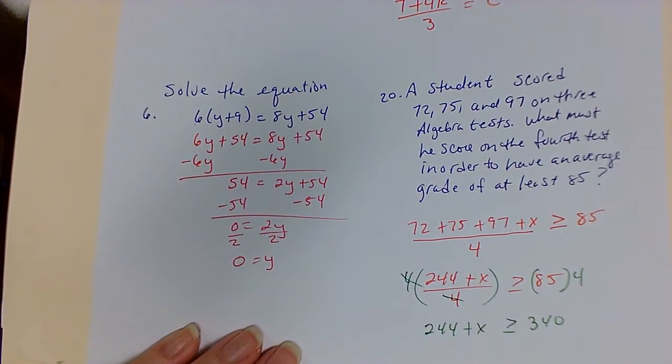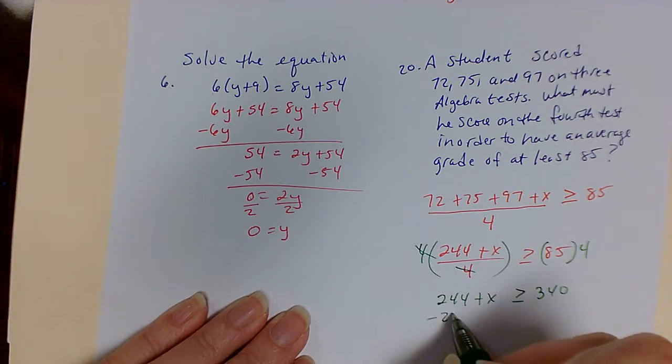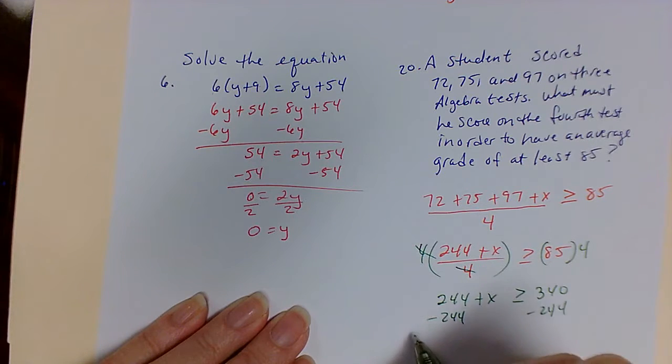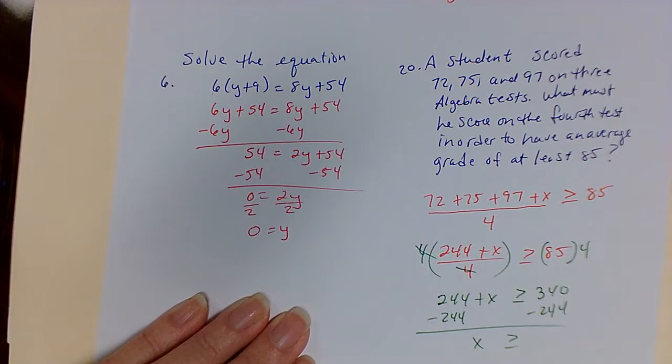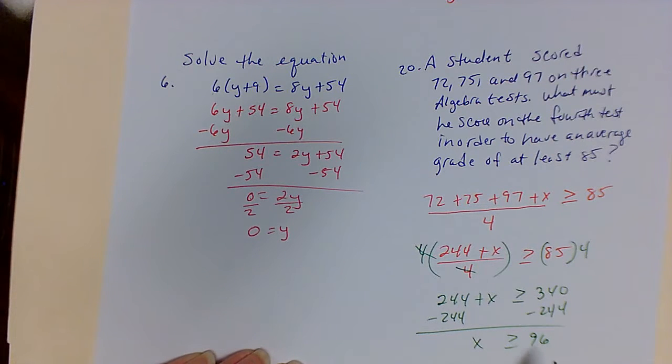Now I just subtract 244, which gives me x is greater than or equal to 96. So the student must score at least 96 to make the 85 average.